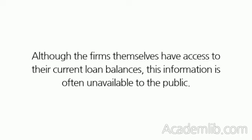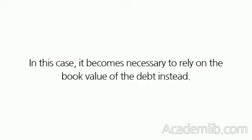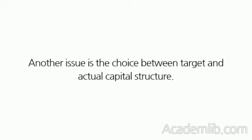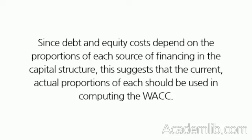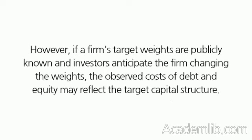Although the firms themselves have access to their current loan balances, this information is often unavailable to the public. In this case, it becomes necessary to rely on the book value of the debt instead. Another issue is the choice between target and actual capital structure. Since debt and equity costs depend on the proportions of each source of financing in the capital structure, this suggests that the current actual proportions of each should be used in computing the WACC. However, if a firm's target weights are publicly known and investors anticipate the firm changing the weights, the observed costs of debt and equity may reflect the target capital structure.